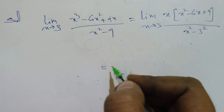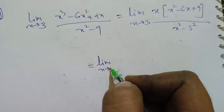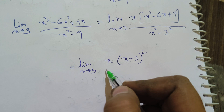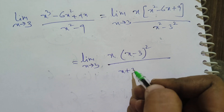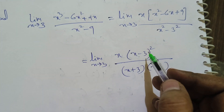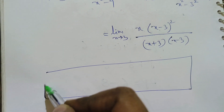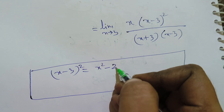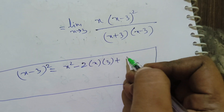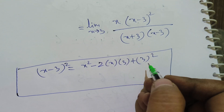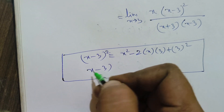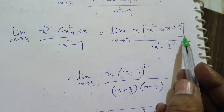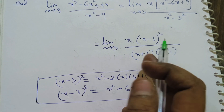In the numerator, x² - 6x + 9 can be written as (x-3)², because (x-3)² expands to x² - 2·x·3 + 3² = x² - 6x + 9, which is the a² - 2ab + b² form. So instead of writing x² - 6x + 9, we write (x-3)².